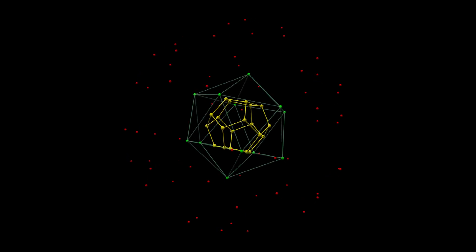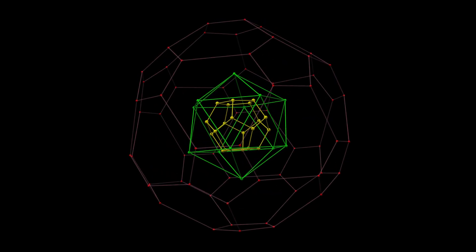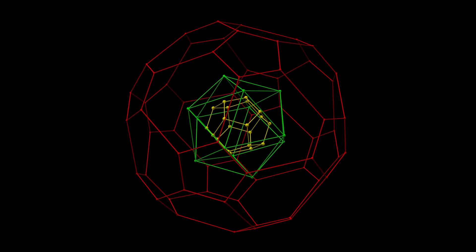The yellow vertices form a dodecahedron, the green ones an icosahedron, and the outer red ones an irregular truncated icosahedron, like a football or soccer ball.